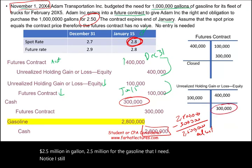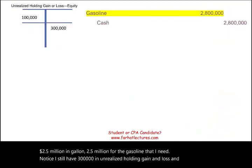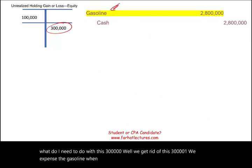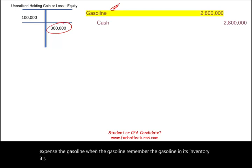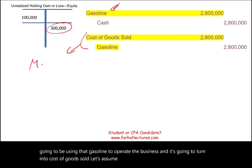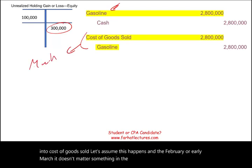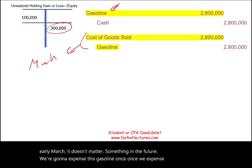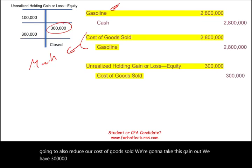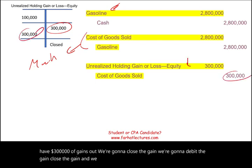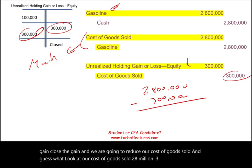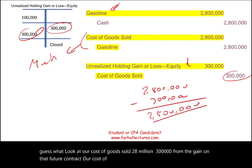You still have $300,000 sitting in Unrealized Holding Gain/Loss — OCI. You get rid of this when you expense the gasoline. The gasoline is inventory — an asset — and sometime in February or March it will be used to operate the business, turning into cost of goods sold. Once you expense the gasoline, you close the OCI gain: debit Unrealized Holding Gain/Loss — OCI $300,000 and credit Cost of Goods Sold $300,000, reducing the cost of goods sold.